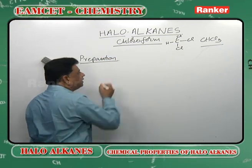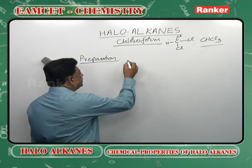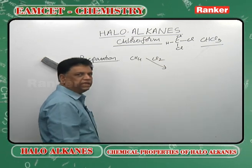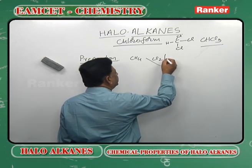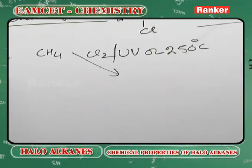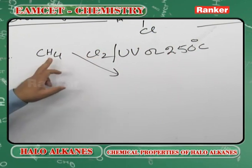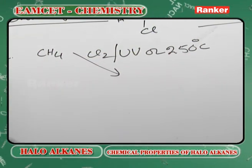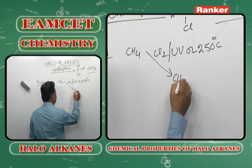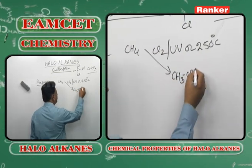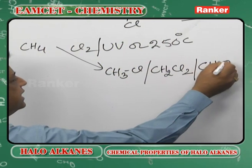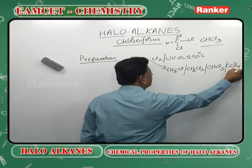For preparation methods, there are two methods common to haloalkanes. Starting from methane, you chlorinate it — methane chlorination takes place in the presence of either UV light or at 250 degrees centigrade. The reaction is a free radical substitution: one chlorine radical removes the hydrogen radical, forms HCl, and another Cl radical attacks CH3 radical giving methyl chloride. But methyl chloride is not the final answer — it gives further chlorination to CH2Cl2, then CHCl3, then CCl4.